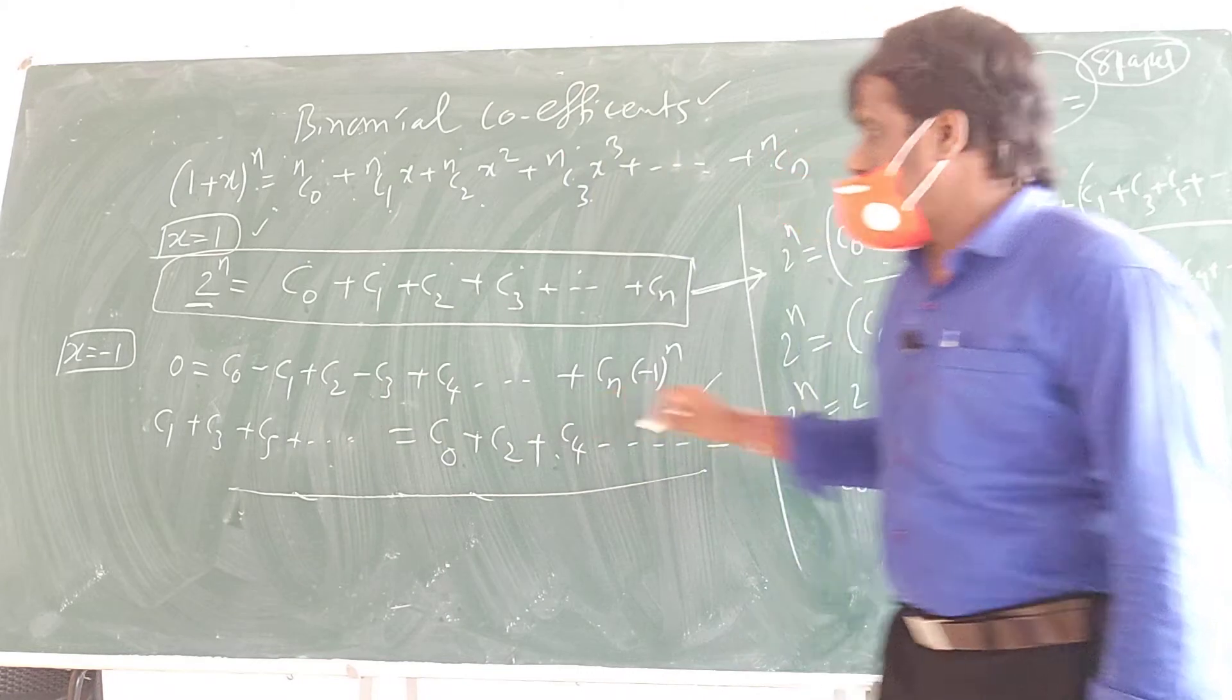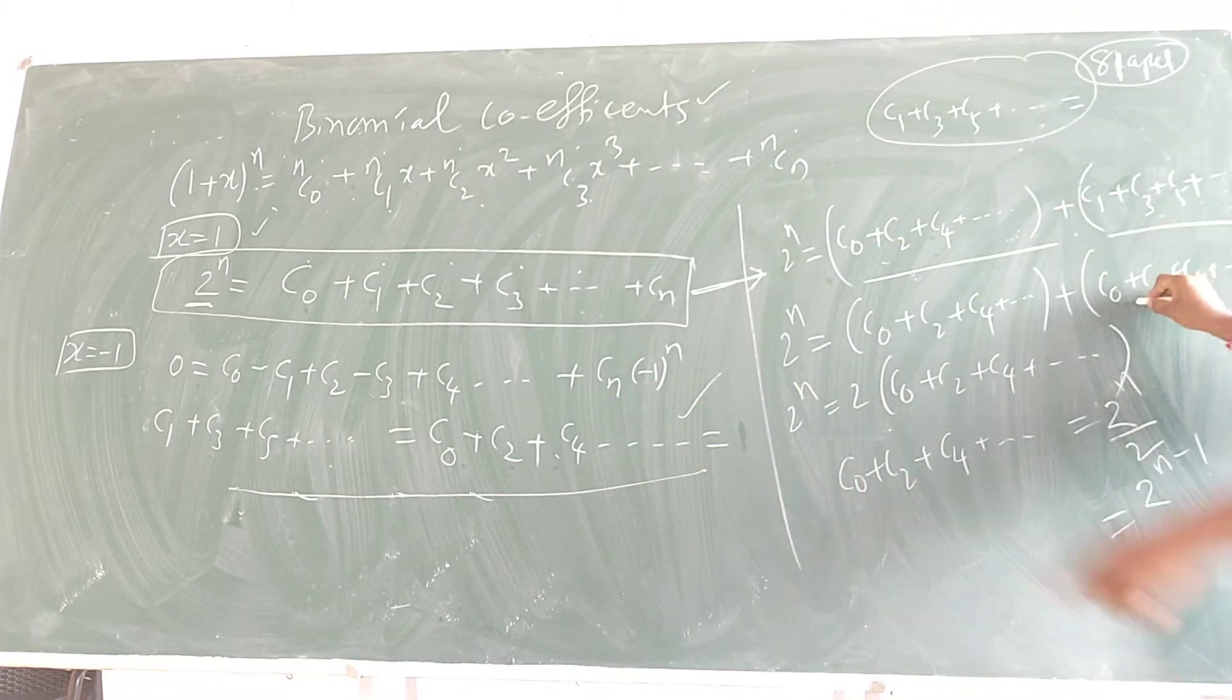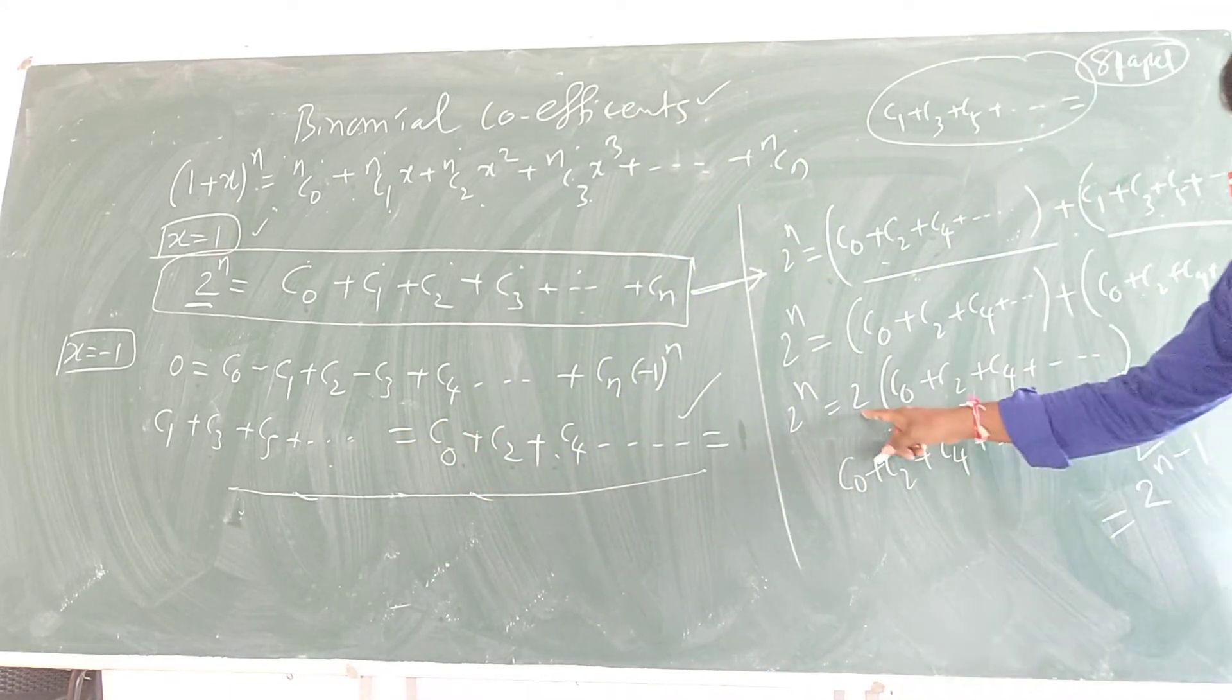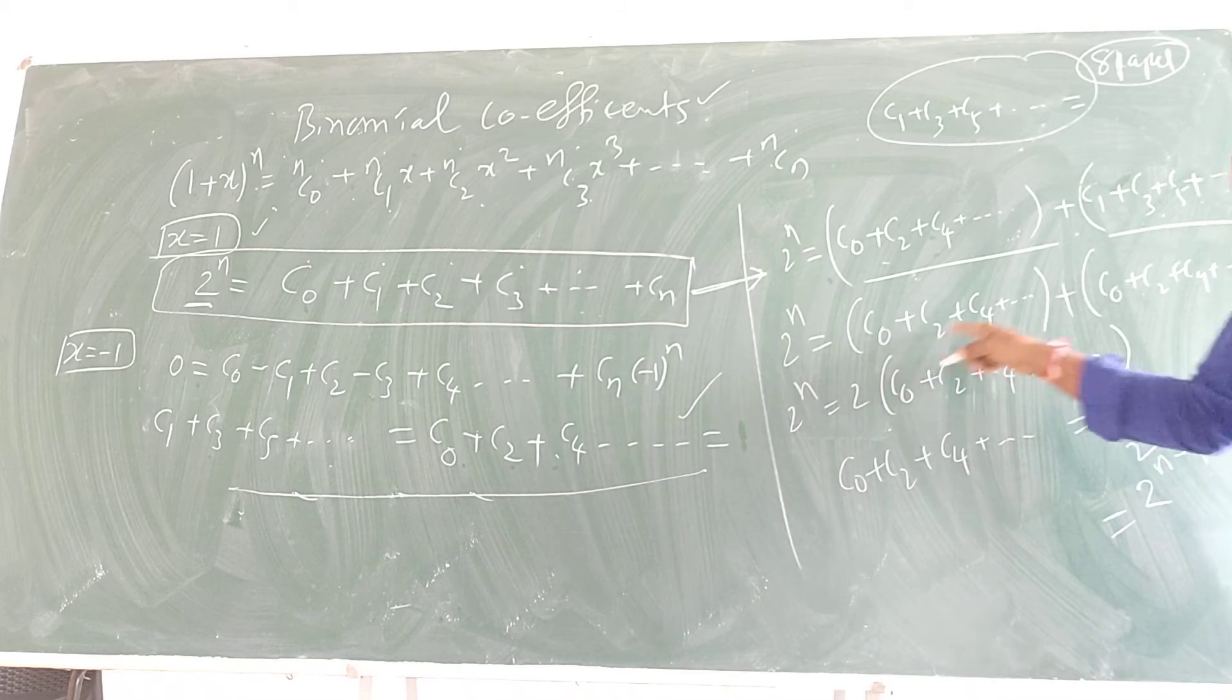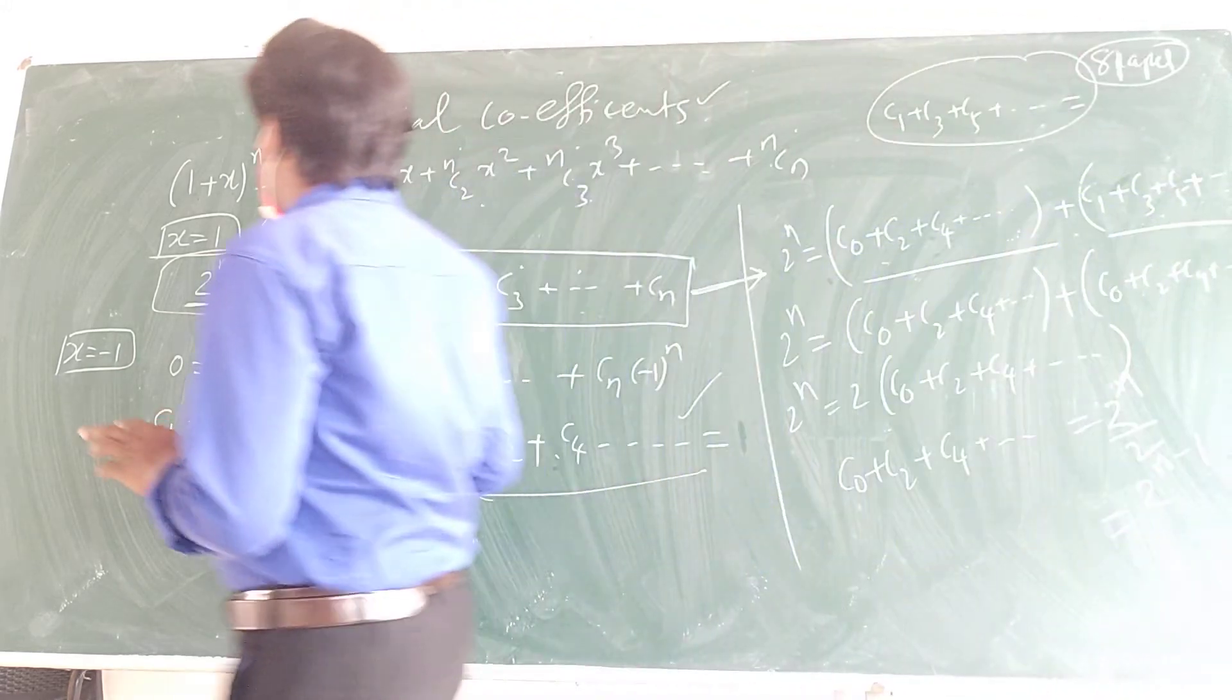And now as per this rule, I can replace this one as this, or this one as this. So if I replace, this left-hand side is equal to right-hand. If I replace, I will get this one two times, so this answer is 2^(n-1). So in this, what you have understood is mainly you have to understand three points.